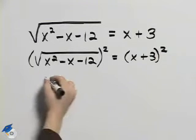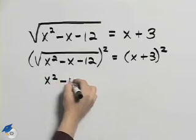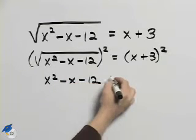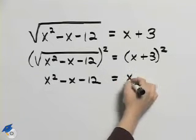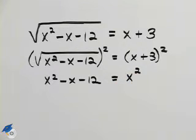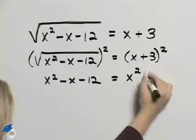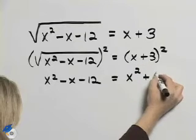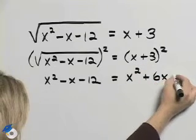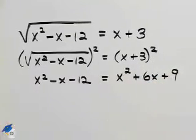The square root of something squared is that thing inside. Now when I square x plus 3 squared I'll have to use the rule that says we square the first term and then we take two times the first and the second term so we'll have 6x plus the square of the second term.